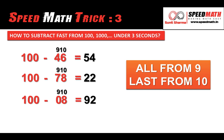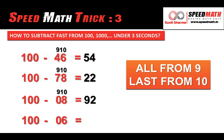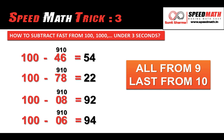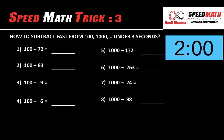Let's take one more example: 100 minus 6. Again, the number of zeros is not equal to number of digits, so we put a zero in front to get 06. All from 9 and last from 10: 9 minus 0 gives you 9, 10 minus 6 gives you 4. The answer is 94. If you have understood this, I would encourage you to solve these eight questions — take two minutes and solve them.